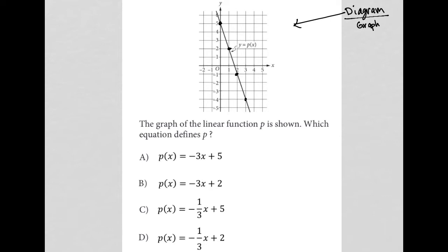The question says the graph of the linear function P is shown which equation defines P. So there are a number of ways that I can solve this question. First of all, I'm going to say as a habit, whenever you see the term linear function, you should be thinking of y equals mx plus b. In this case, our y is a function P. So we could think of it as P of x equals mx plus b. And that means all we would need to do is figure out the slope and the y-intercept, and we'd have a solution. So we can do that really quickly because we know that the y-intercept here is at 5. So b is 5.